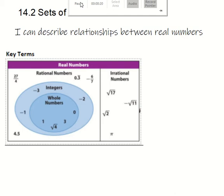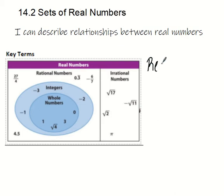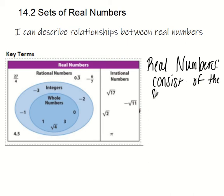Your essential understanding for today is I can describe relationships between real numbers. I am going to have you guys add in the definition of what real numbers are. I'm going to have you add it right over here, and I'm going to break this down a little bit more. Real numbers, the definition, consist of the set of rational.